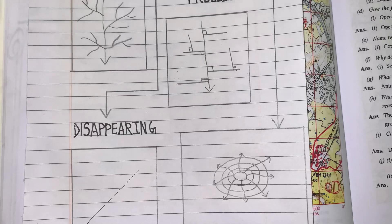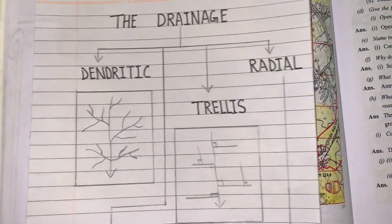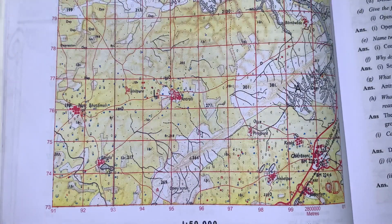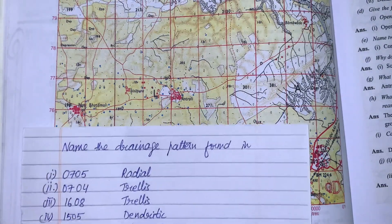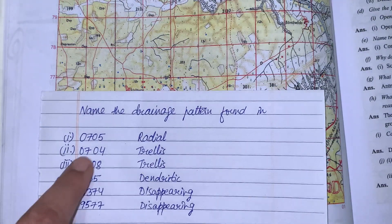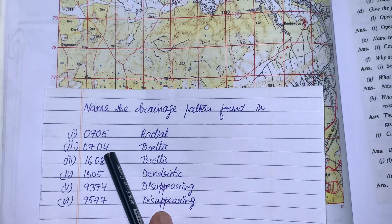I will show you all these types of drainage patterns in your topographical map. Name the drainage pattern found in grid 0705 and 0704.